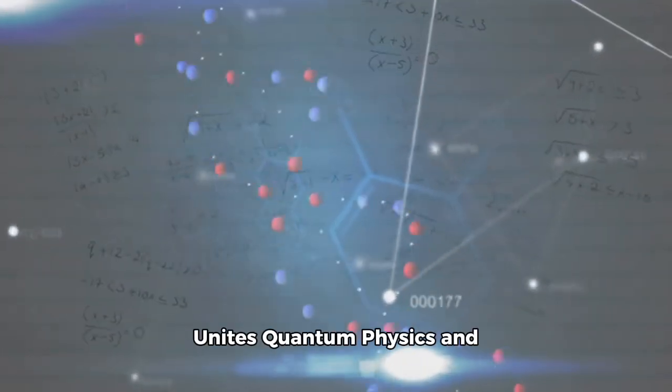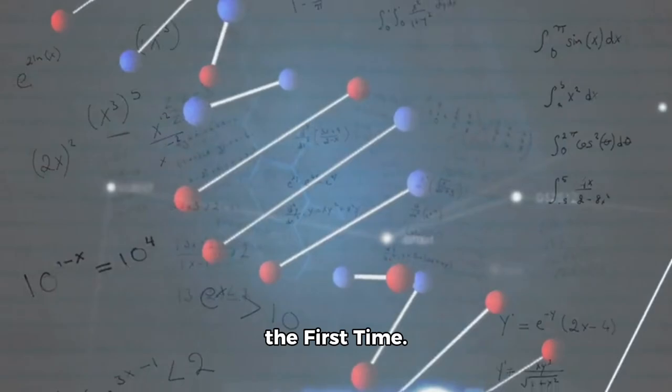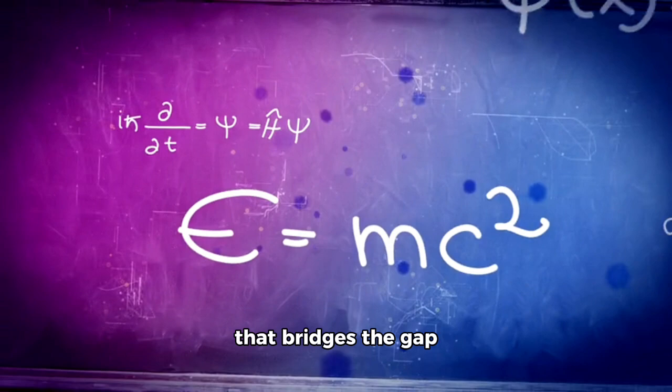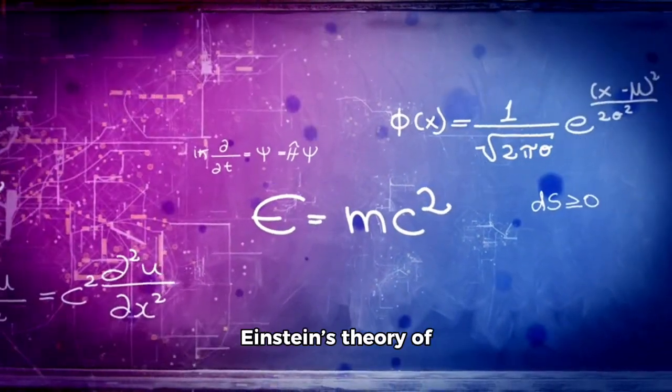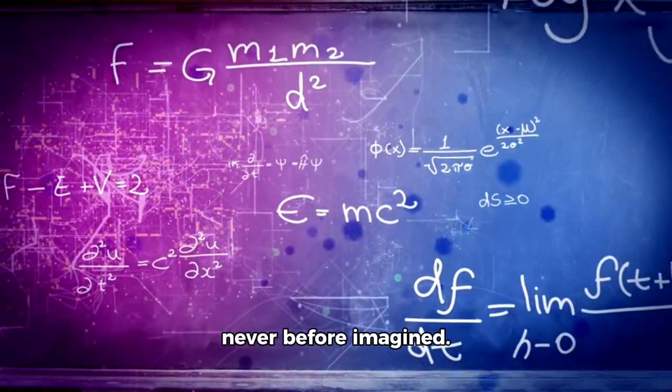Groundbreaking equation unites quantum physics and Einstein's relativity for the first time. Scientists have developed a mathematical equation that bridges the gap between the cosmic and quantum realms, connecting Einstein's theory of general relativity with quantum physics in a way never before imagined.